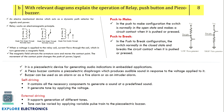With relevant diagrams explain the operation of relay, push button, and buzzer. This carries eight marks, divided approximately as two plus two plus four, or three plus three plus two. Provide a brief explanation for each: how the relay works, how the push button operates, and how the buzzer works, with corresponding diagrams for each.